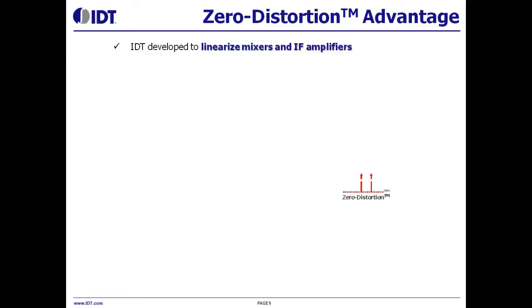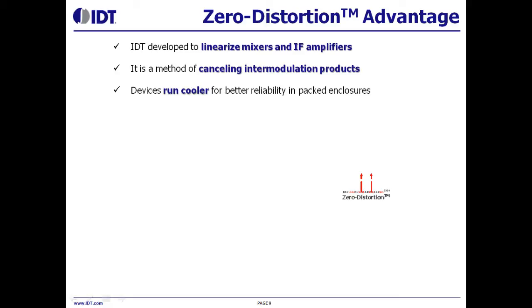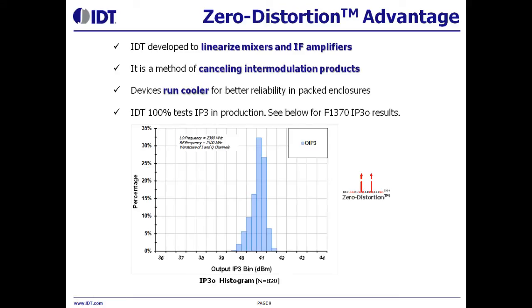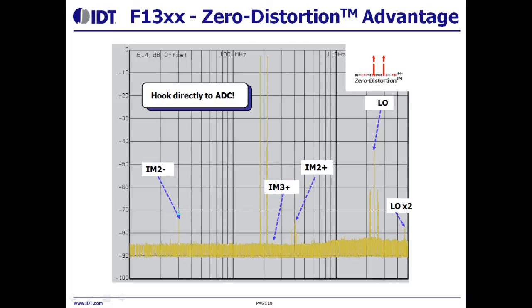Zero distortion is a technology that redesigns the mixer and IF amplifier to cancel intermodulation products significantly inside the device. It helps the device run cooler for better linearity. As you can see, the F3070 quadrature mixer using zero distortion shows typical plus 41 dBm IP3 ultralinear performance. IDT-F3070 spurious measured at the second harmonic is suppressed to 75 dBm IP2, allowing relaxed BPF design with direct ADC drive.